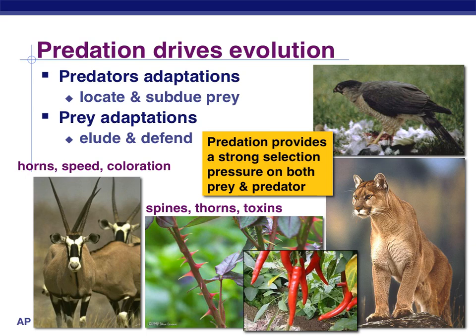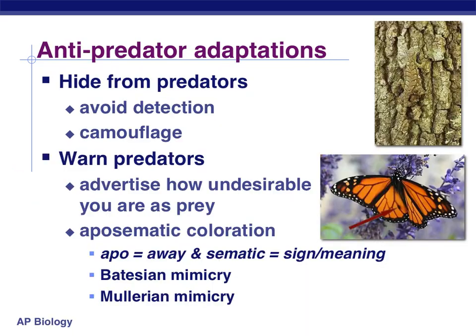What are some of these adaptations? First, you can hide from predators — if they can't detect you, they can't eat you. The classic example is camouflage. You can also warn your predators: 'I really don't taste good or I'm poisonous — it wouldn't do you good to eat me.' You advertise that through really bright colors, distinctive spots, or distinctive patterns. The term for this ability to warn predators through color is called aposematic coloration. 'Apo' means away and 'somatic' means sign — a sign that tells you to go away. Two kinds of mimicry fall in line with this kind of coloration.